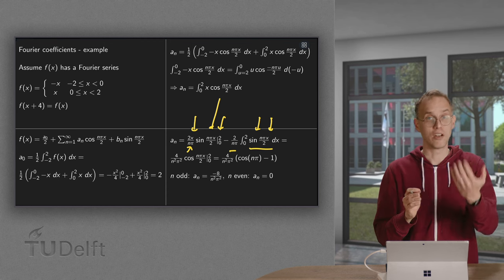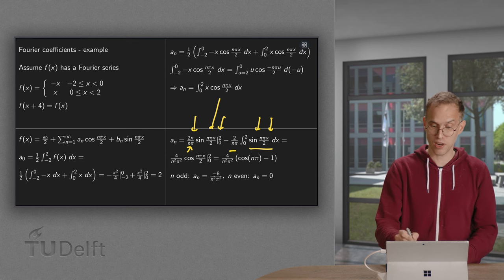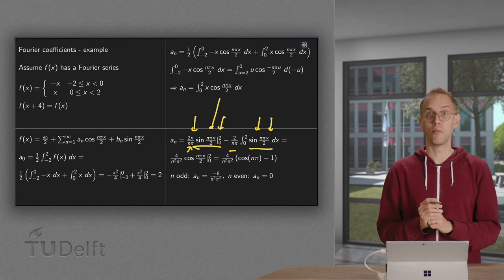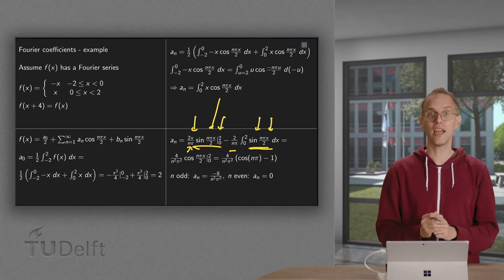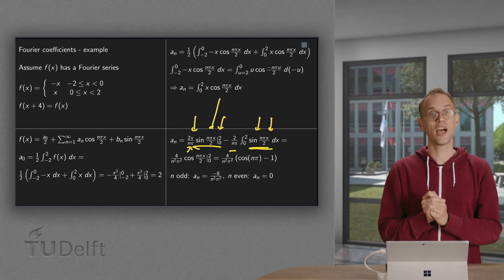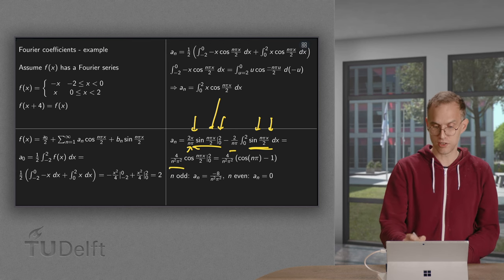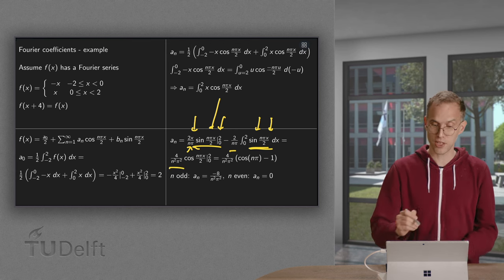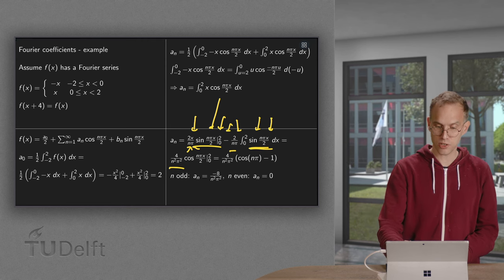Now these first terms: there we get the sine n pi, which is 0. Sine of a multiple of pi is 0, minus the sine of 0, which is also 0. So these terms are both 0, and we are only left with the integral. If we integrate the sine, we get minus the cosine times the 2 over n pi, which gives us 4 over n squared pi squared, together with the 2 over n pi and the minus sign, times this cosine.